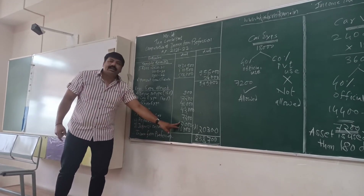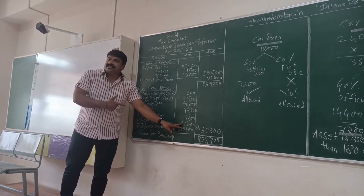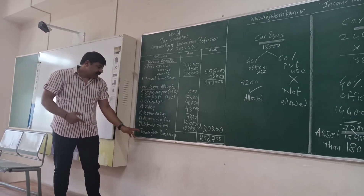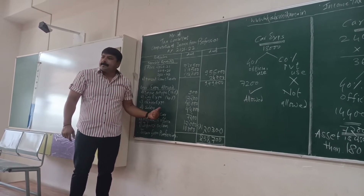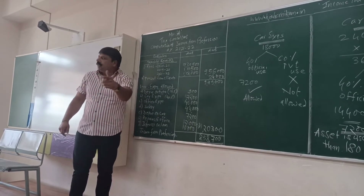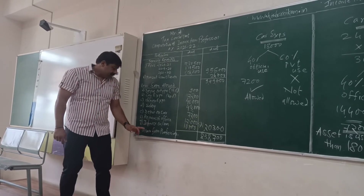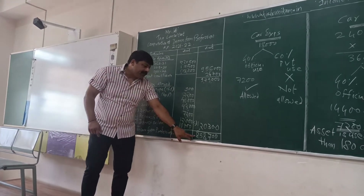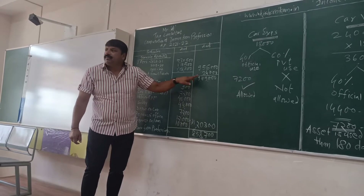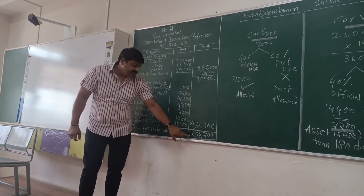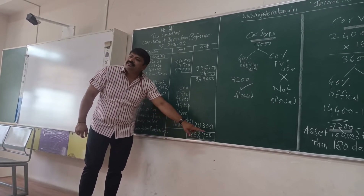Then repairs of office — 12,000, which are allowed as official expenses. Interest on loan is paid; yes, it is revenue expenditure, allowed.